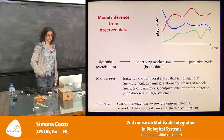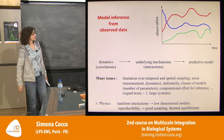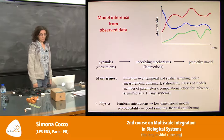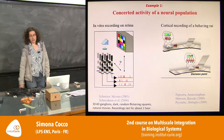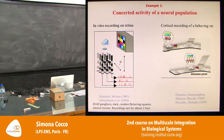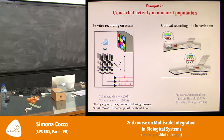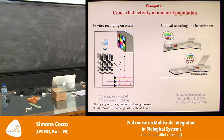I will explain some inference methods based on statistical physics and show them on two examples of data. One is neural data — since about 20 years ago there have been a lot of progress in recording neural populations, for example through multi-electrode arrays.